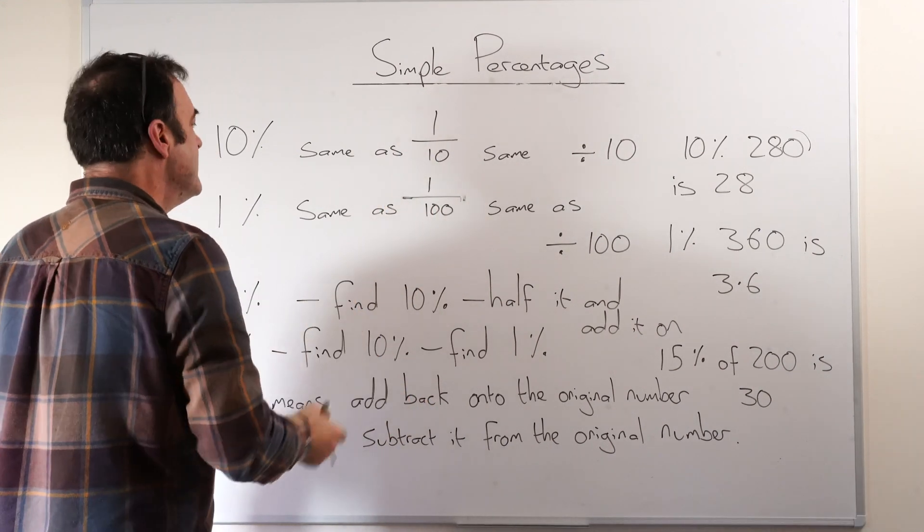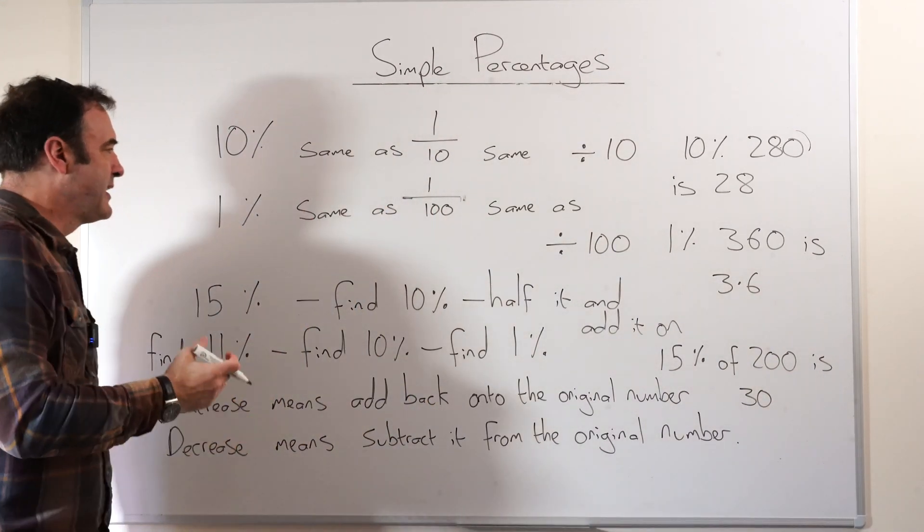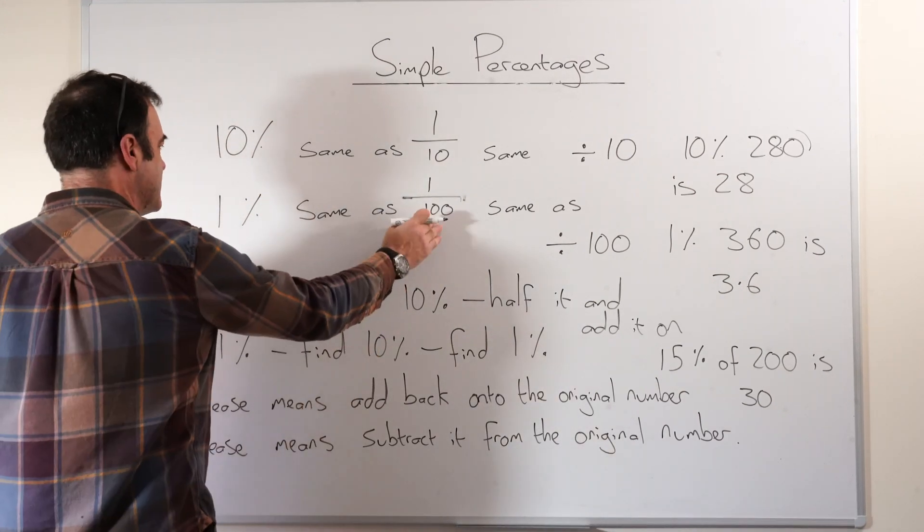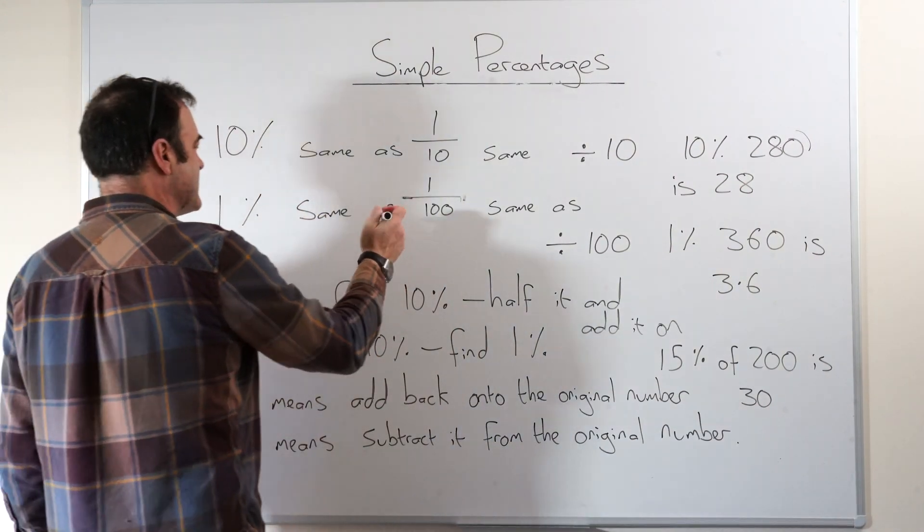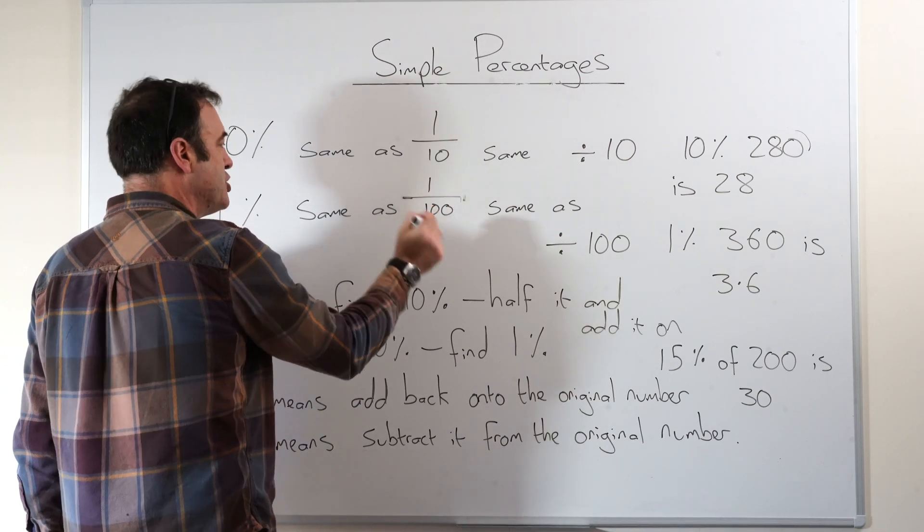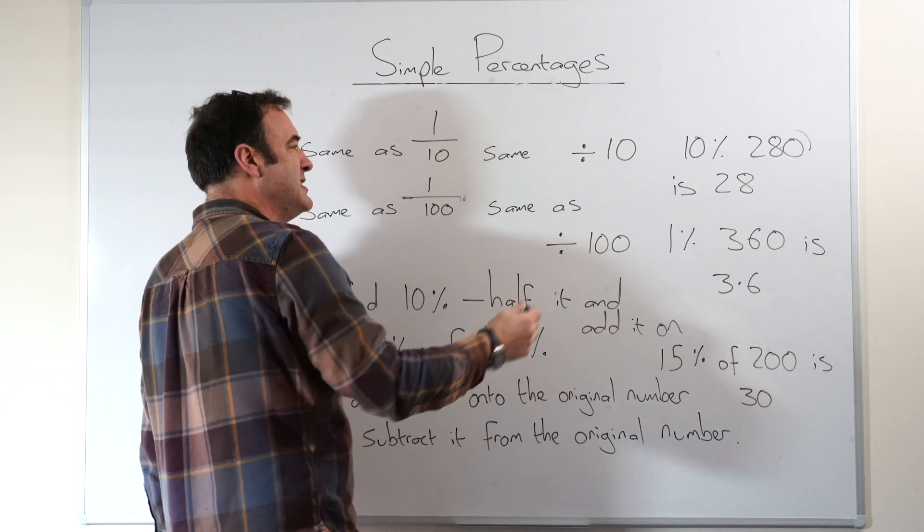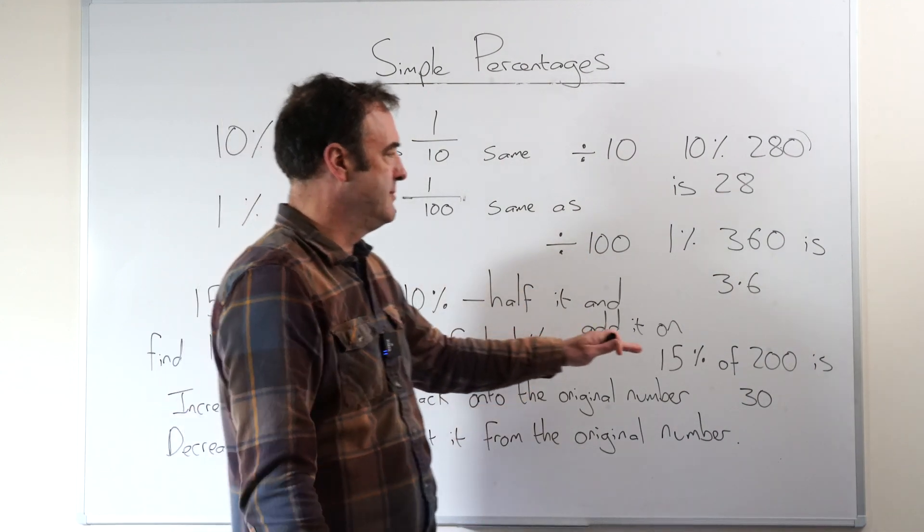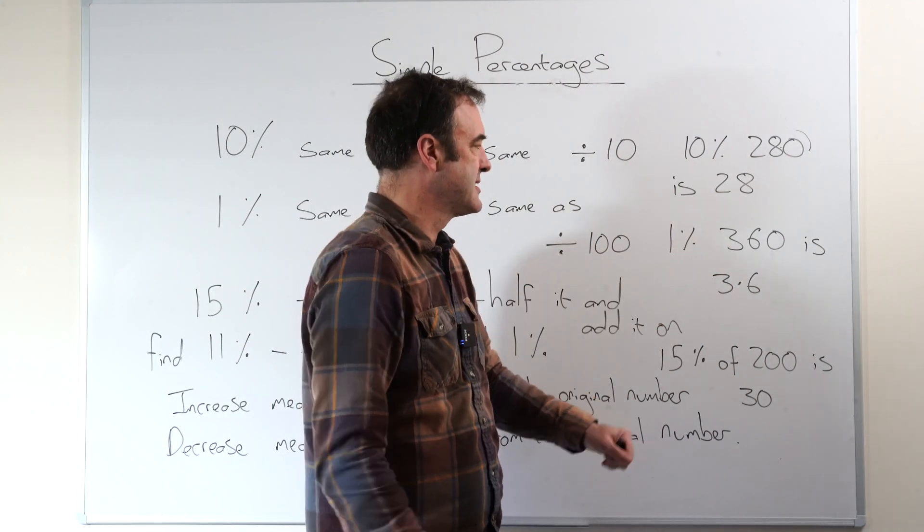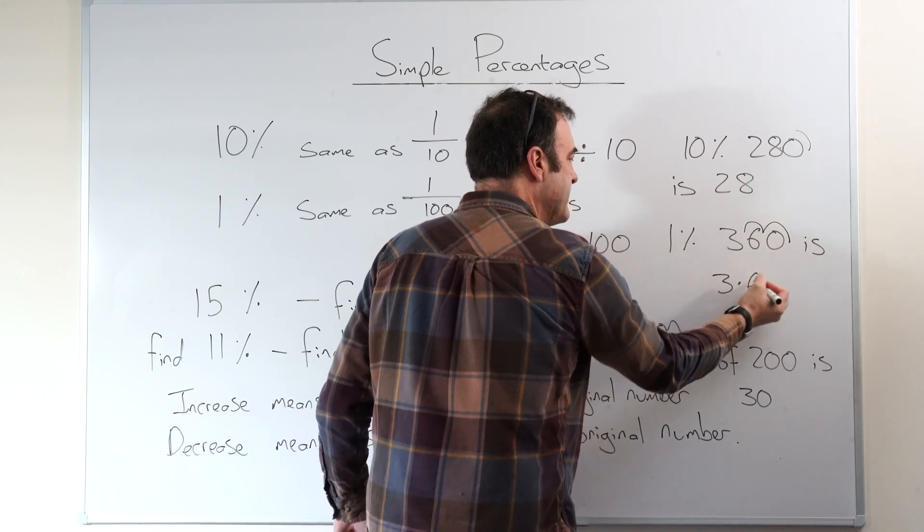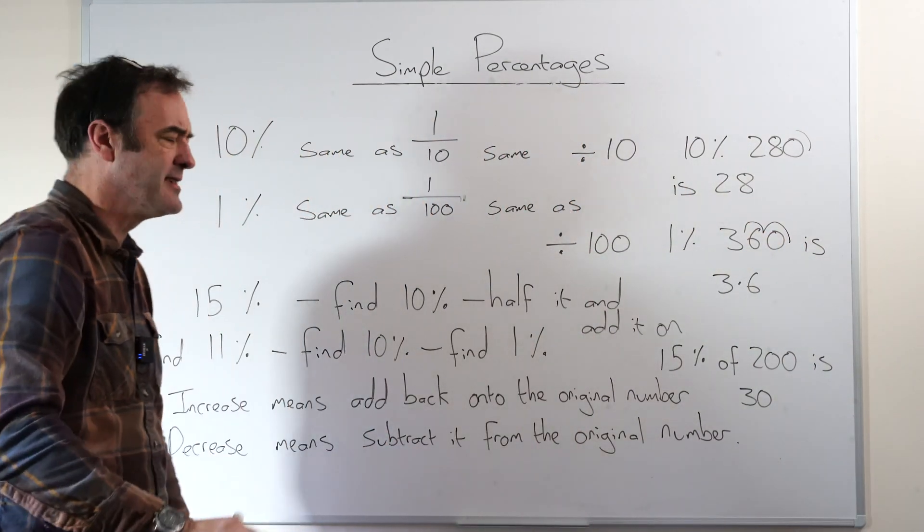Equally, we could find 1% very easily. Percent, after all, is out of 100. So 1% is the same as a 100th is the same as divide by 100. So if we wanted to find 1% of 360, we would go two steps back. 1, 2, 3.6 is the answer. Very easy.